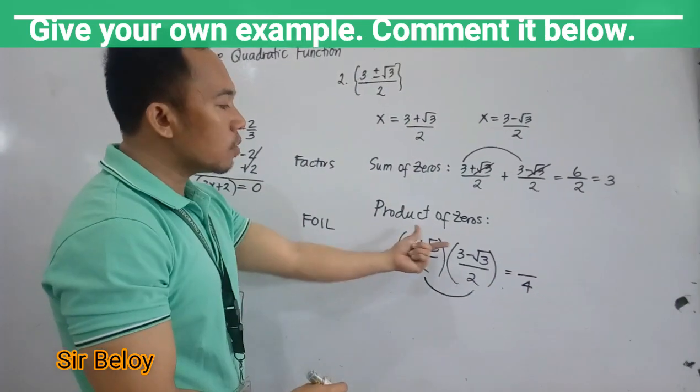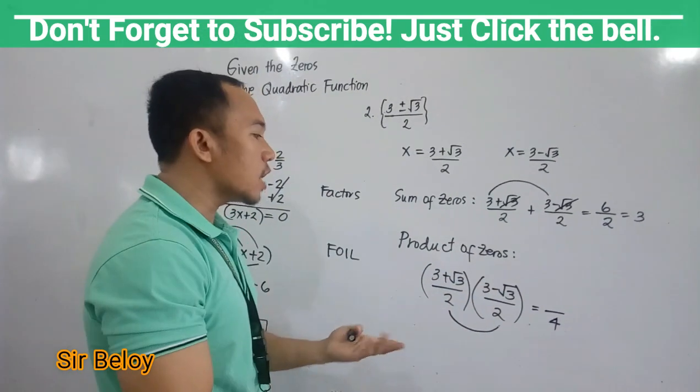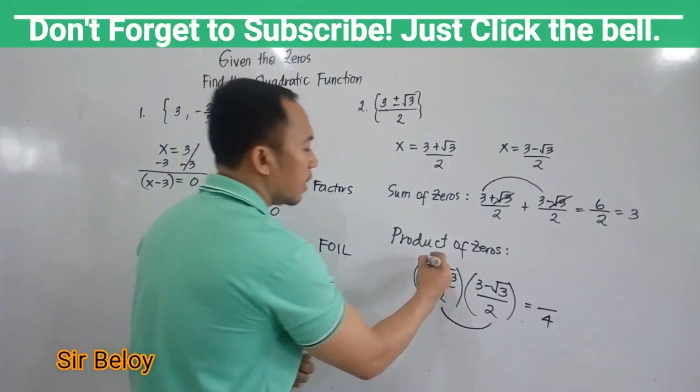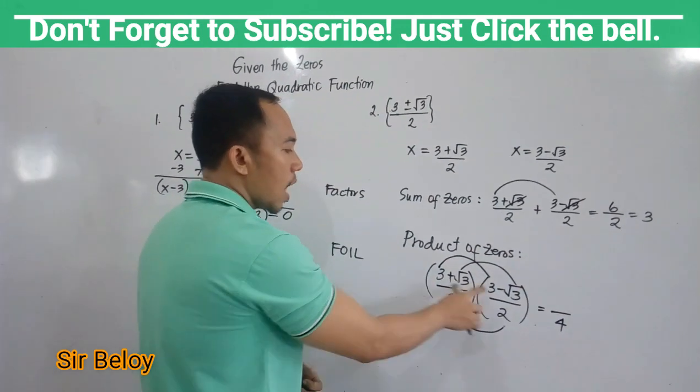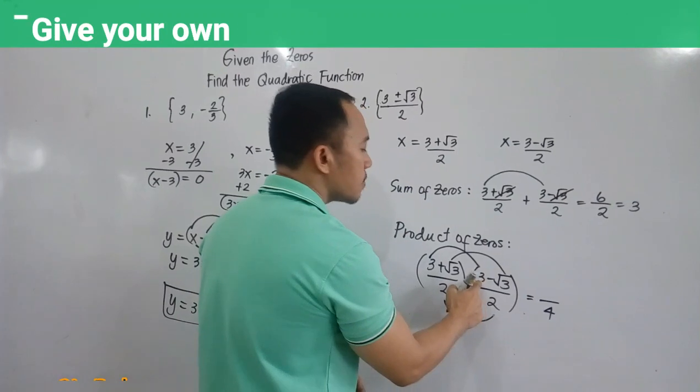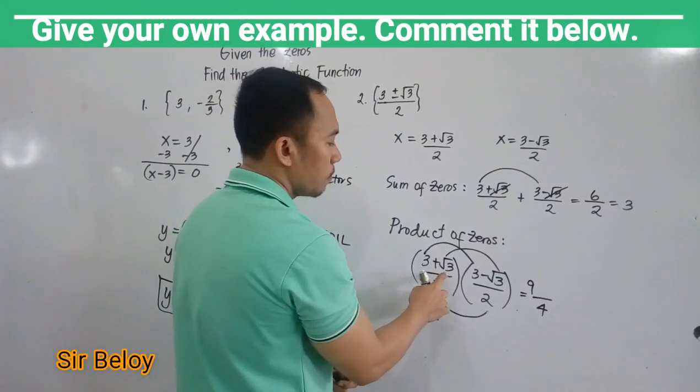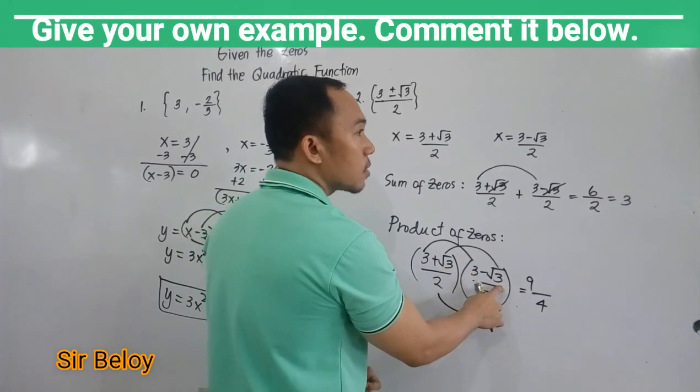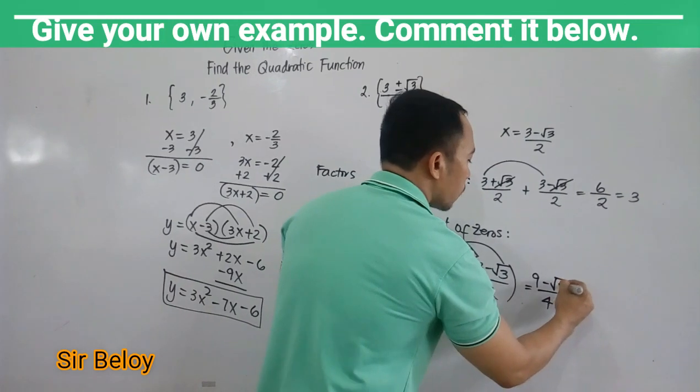And for numerators, since the binomials have different signs, we will just use FL - First and Last. So our first is 3 times 3, which is 9. Then our last is square root of 3 times square root of 3. So negative square root of 9.